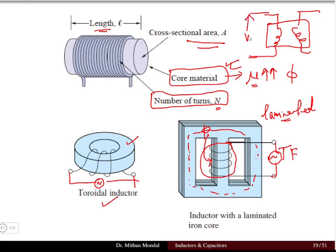When you have two coils — coil number one (primary) and coil number two (secondary) — linked with a common magnetic core, due to Faraday's law of electromagnetic induction, if you apply a voltage V to the primary coil, there will be an induced EMF on the secondary coil.